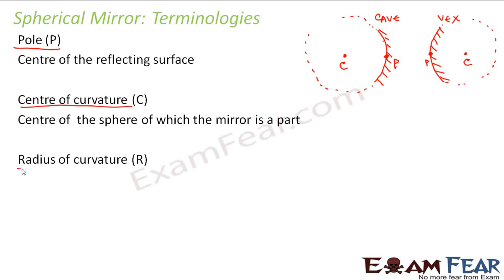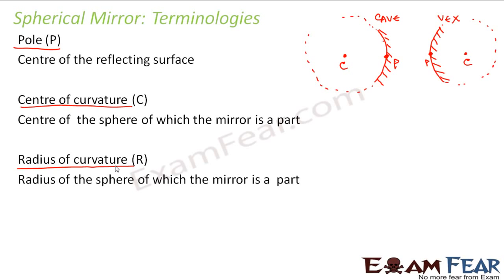Next we have radius of curvature. Just as center of curvature refers to the center of the sphere, radius of curvature refers to the radius of the sphere of which the mirror is a part. So this distance — from the center of the sphere to its surface — is the radius of curvature. This applies to both concave and convex mirrors.